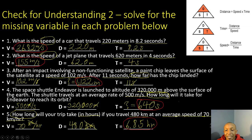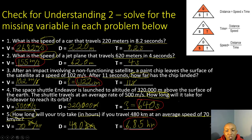Number four: the Space Shuttle Endeavor is launched to an altitude of 320,000 meters above Earth's surface. The shuttle travels at an average rate of 500 meters per second. How long would it take for Endeavor to reach its orbit? We're solving for time. Distance ÷ speed: 320,000 ÷ 500 = 640 seconds. Cross out the light units — meters — leaving seconds.